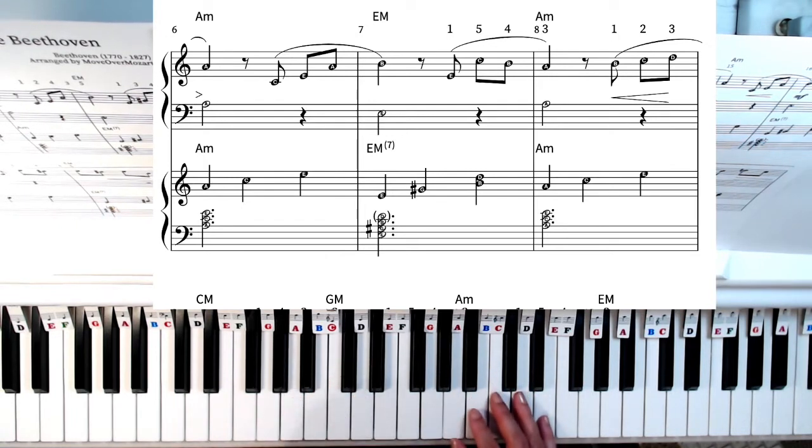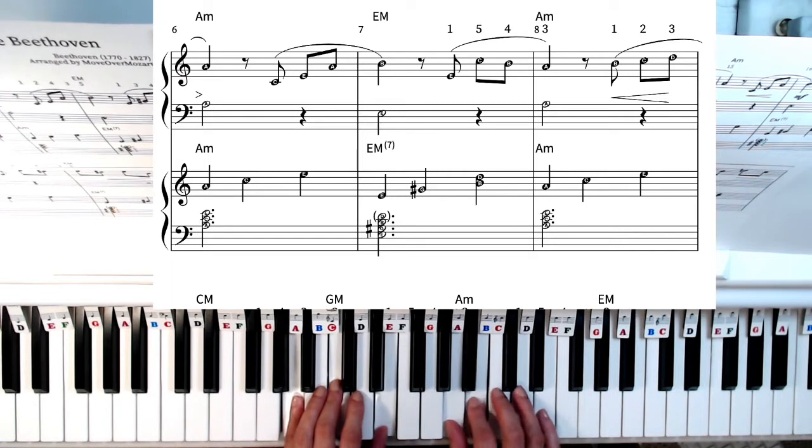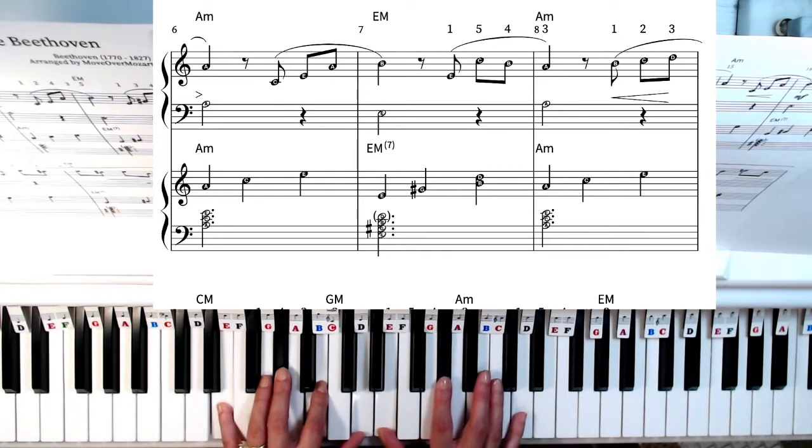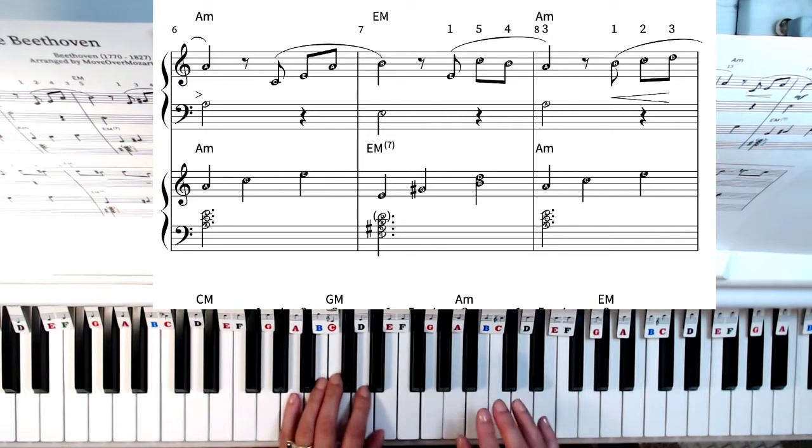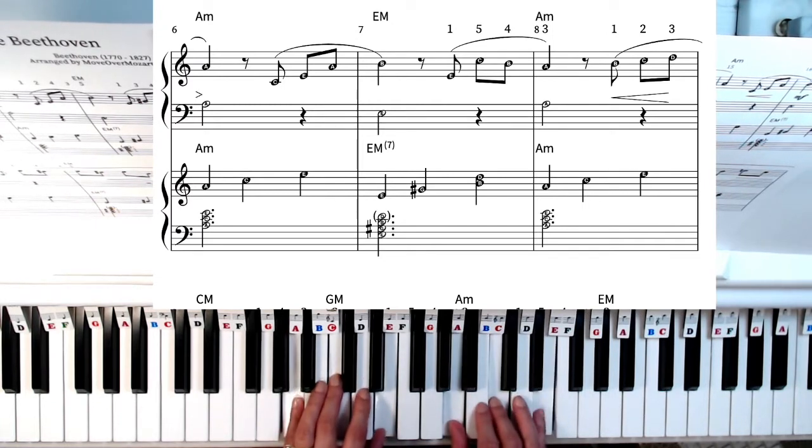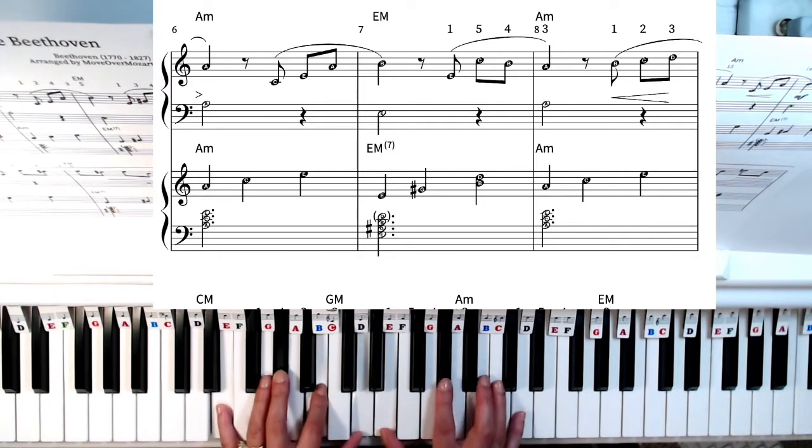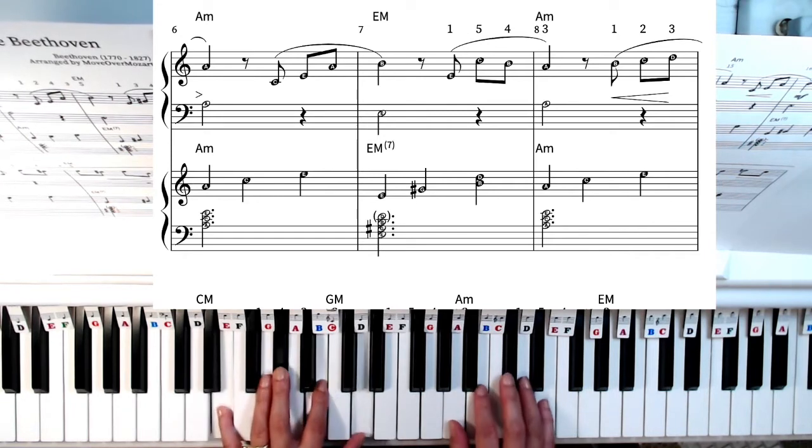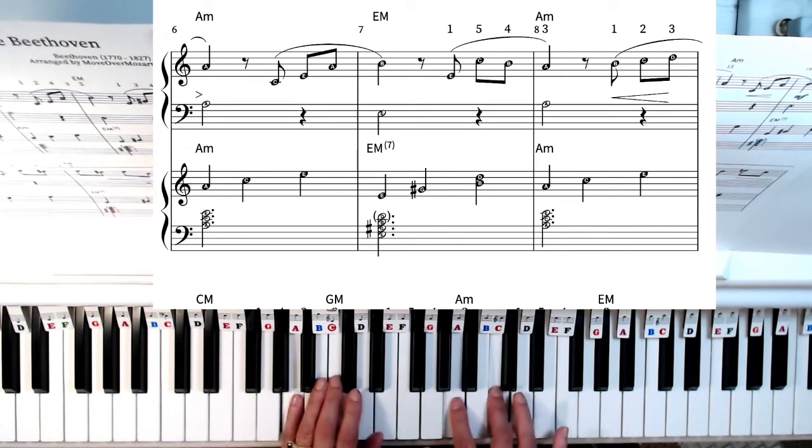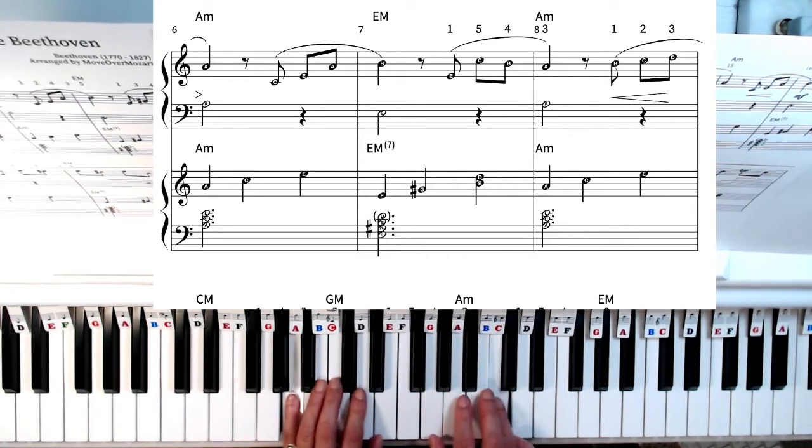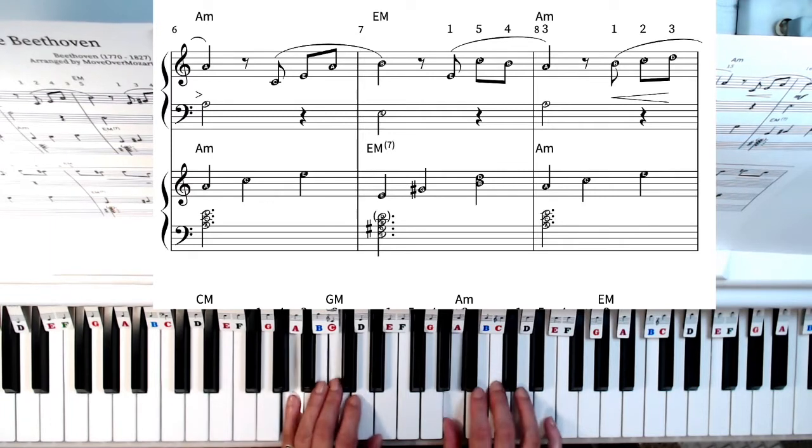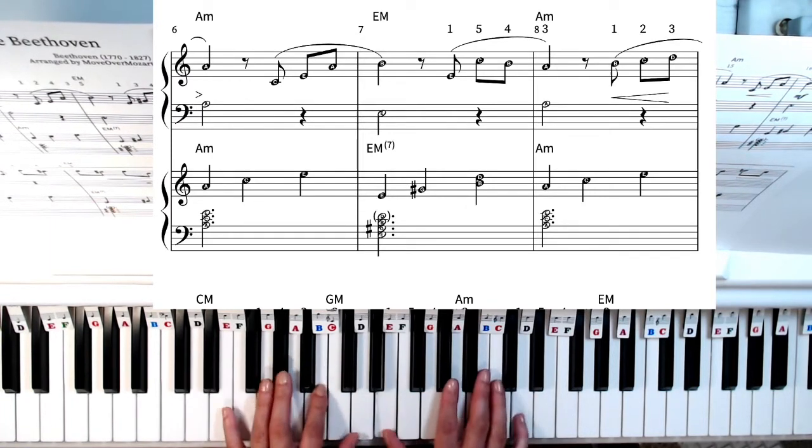Now between measures one and measure eight all we have done is basically shifted between the E major seventh chord so E, G sharp, B, and D and the A minor chord which is A, C, and E. So if you can memorize these two chords E major seventh and A minor and then all you have to do is just add the melody on top. E major, A minor, and then you're back at E major seventh, A minor, E major, A minor.